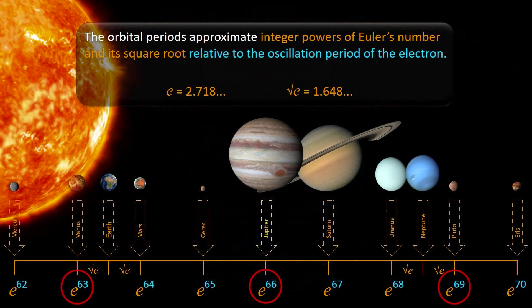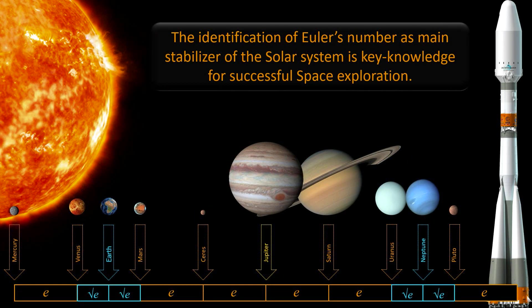The scale in this graphic is logarithmic and shows the planets and large planetoids in the sequence of their orbital periods. The orbital periods approximate integer powers of Euler's number and its square root, relative to the oscillation period of the electron. Conventional models of the solar system consider the current orbital periods of the planets and planetoids as accidental. On this background, the identification of Euler's number as main stabilizer of the solar system is key knowledge for successful space exploration.